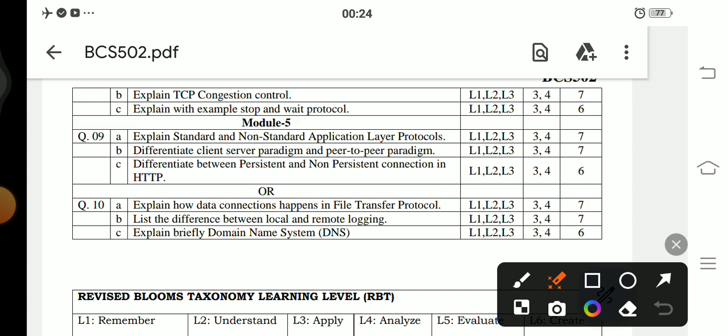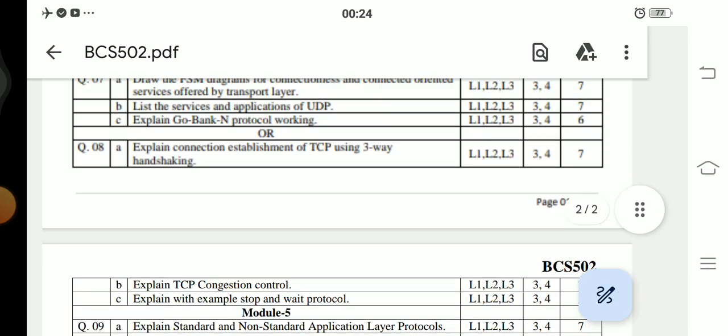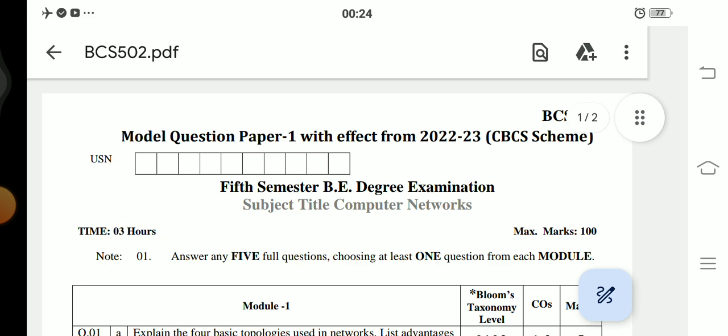10a: Explain how the data connections happen in File Transfer Protocol. 10b: List the difference between local and remote logging. 10c: Explain briefly the DNS, that is the Domain Name System. So this is the model question paper which is being released by the VTU today. This is for the subject Computer Networks.